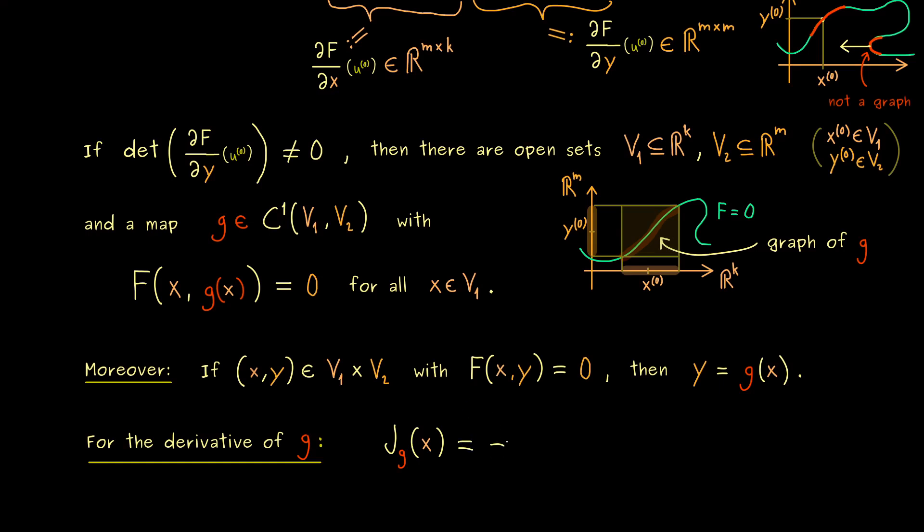And we get minus two Jacobians multiplied. And the first matrix we have here is the Jacobian with respect to y, and we have to evaluate it at the point (x, g(x)). Hence at the point x^0, this should be just our u^0. And there we know by assumption the inverse exists.